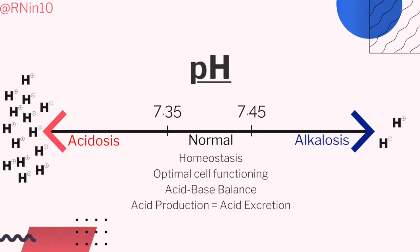pH is the hydrogen ion concentration in the body. Normal arterial blood has a pH of 7.35 to 7.45. This is the ideal hydrogen ion concentration for optimal cell functioning. When we have too many hydrogen ions, our pH goes down and our blood becomes acidic — this is called acidosis and can lead to death. When we have too few hydrogen ions, our pH goes up and our blood becomes alkaline — this is called alkalosis and can also lead to death.